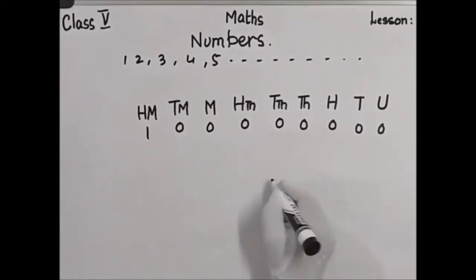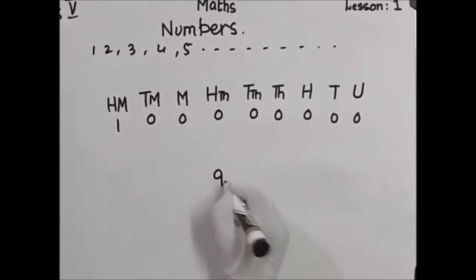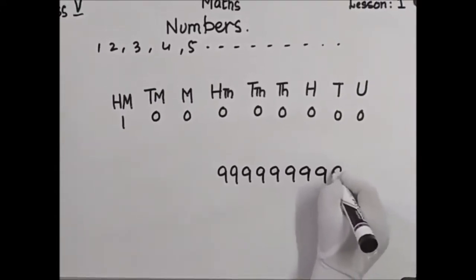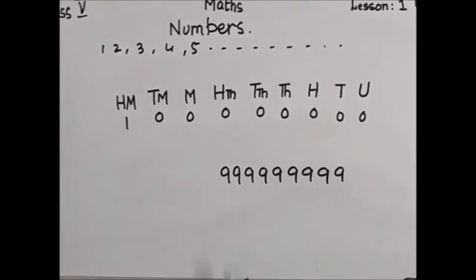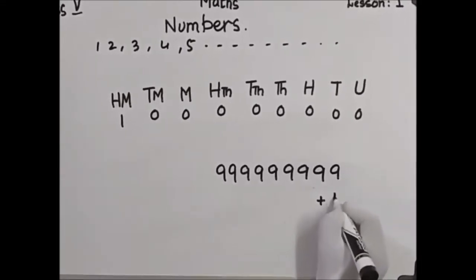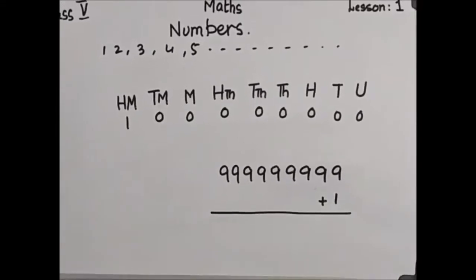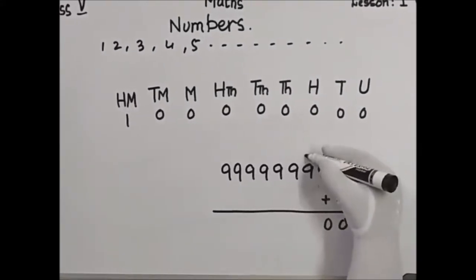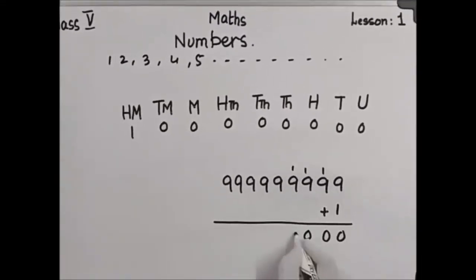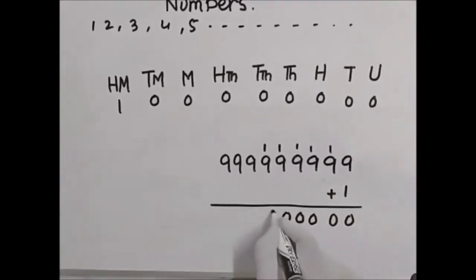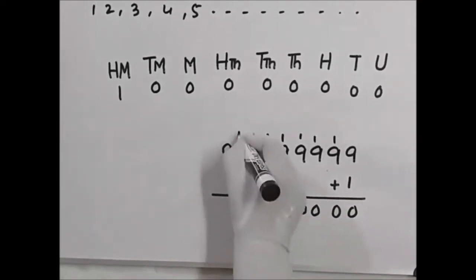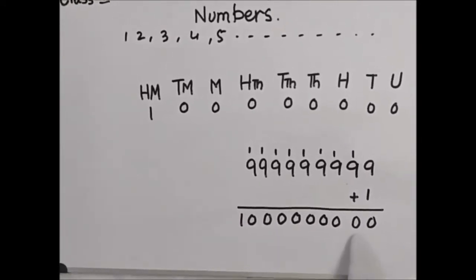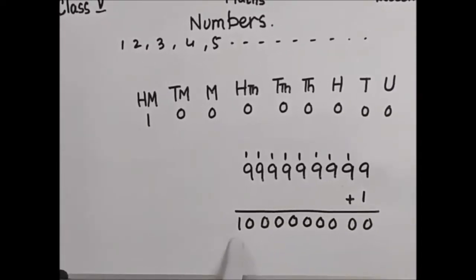When we take the highest nine-digit number: one, two, three, four, five, six, seven, eight, nine — that is the highest nine-digit number. When we add one to it, by carrying one over, we get zeros across all places and write ten. Now it is a ten-digit number.